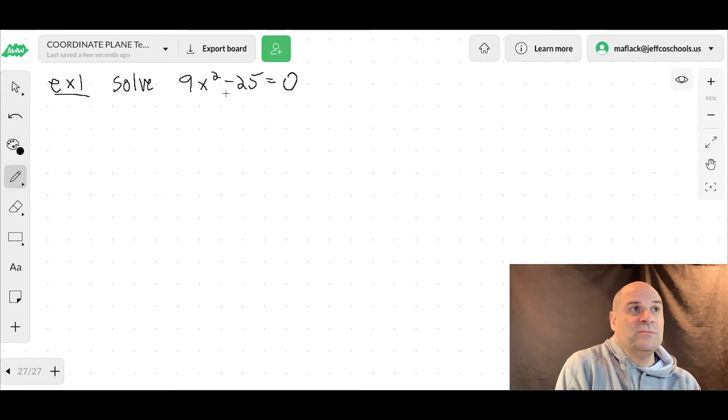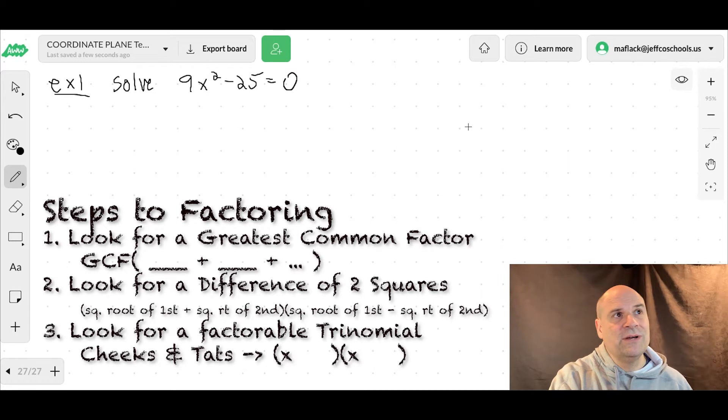Well, is this factorable? Well, step to factoring. Number one, look for a greatest common factor. Nope. Number two, look for a difference of two squares. Difference means subtraction, so it's a subtraction problem.